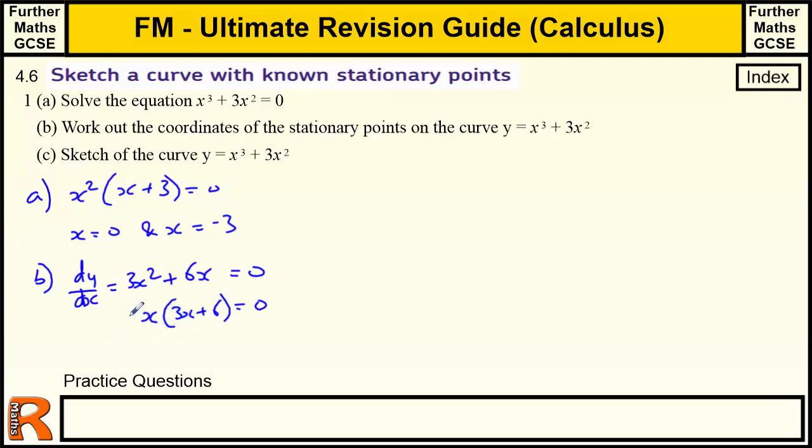We're left with 3x + 6 = 0. We can actually factorize out 3, so we have 3x(x + 2) = 0. That gives us two solutions, one where x = 0, because when x is 0, 3 times 0 is 0, times that is 0. And the other one is where x = -2. So those are two X values for our stationary points.